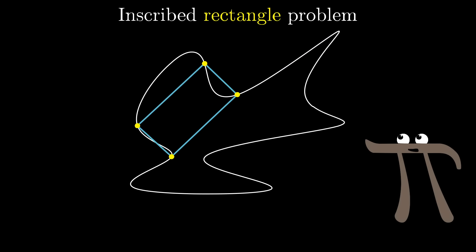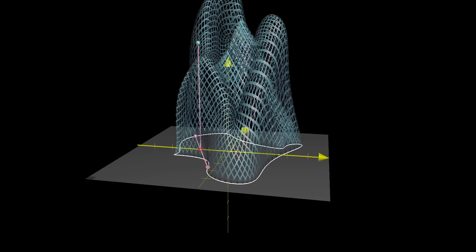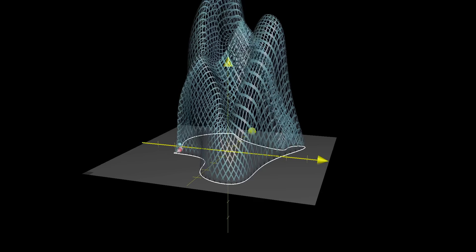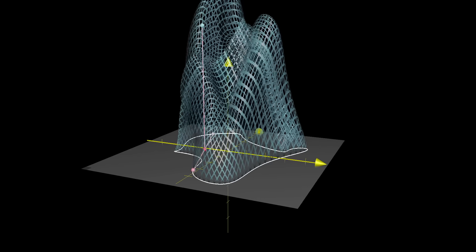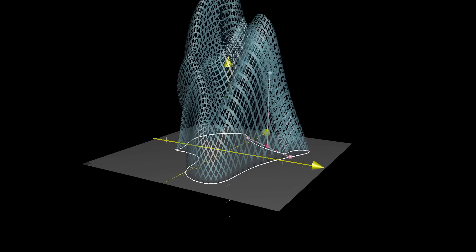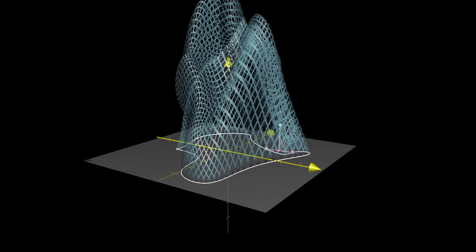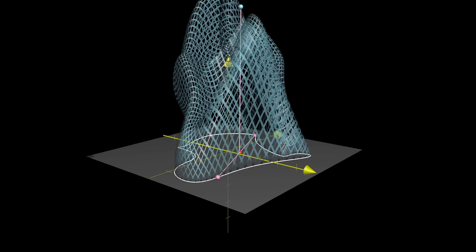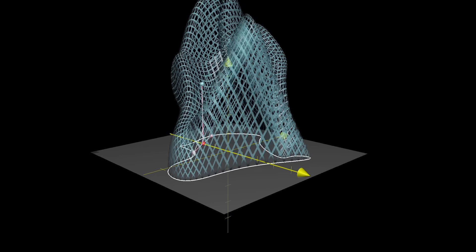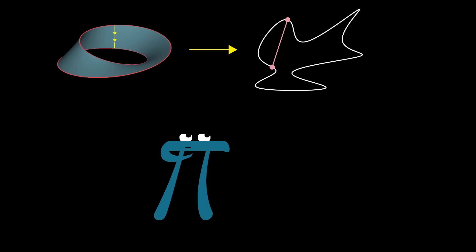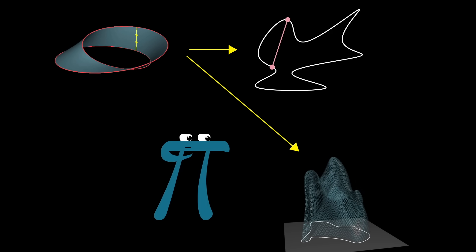Now, with this fact that there is a continuous one-to-one association between unordered pairs of points on the loop and individual points on this Mobius strip, we can solve the inscribed rectangle problem. Remember, we had defined this special kind of graph in 3D space, where the loop was sitting in the XY plane. For each pair of points, you consider their midpoint m, which lives on the XY plane, and their distance d apart, and you plot a point which is exactly d units above m. Because of the continuous one-to-one association between pairs of points on the loop and the Mobius strip, this gives us a natural map from the Mobius strip onto this surface in 3D space. For every point on the Mobius strip, consider the pair of points on the loop that it represents, then plug that pair of points into the special function.